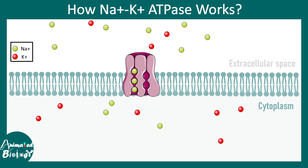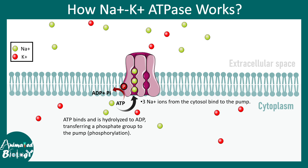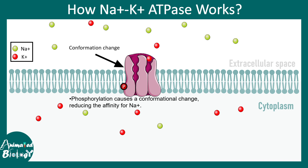The green ions represent sodium and the red ones represent potassium. In the first step, three sodium ions bind to the cytosolic portion of the pump. Then ATP is hydrolyzed, which phosphorylates the sodium potassium ATPase. After that, there is a conformational shift.